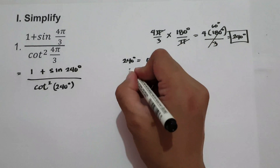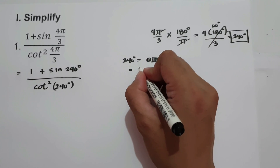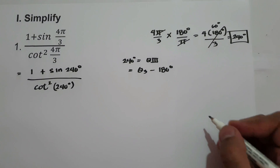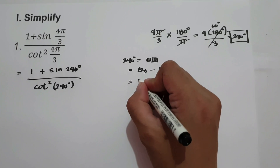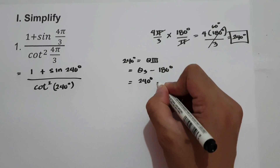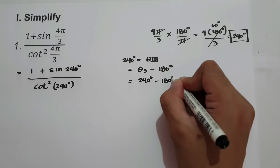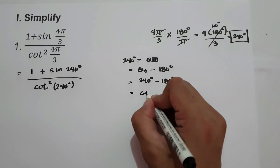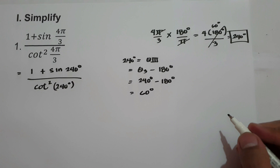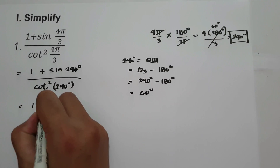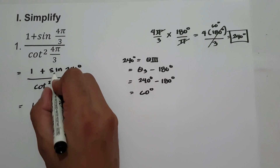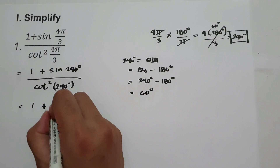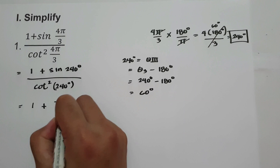The reference angle in quadrant 3 is the given angle minus 180 degrees. The given angle is 240 degrees, minus 180 degrees, giving us 60 degrees. Therefore, we have 1 plus sine 60 degrees in quadrant 3, which is negative square root of 3 over 2.